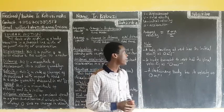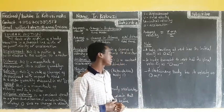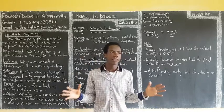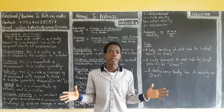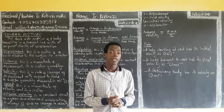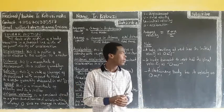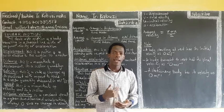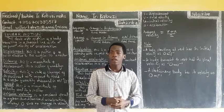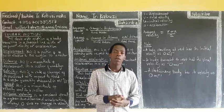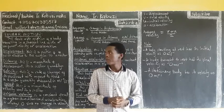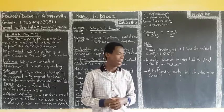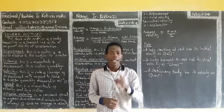A stationary body has its velocity as zero because it is not moving — it stays in one place, so the velocity is zero. From here in this lesson, we are going to see how the equations of motion were derived.